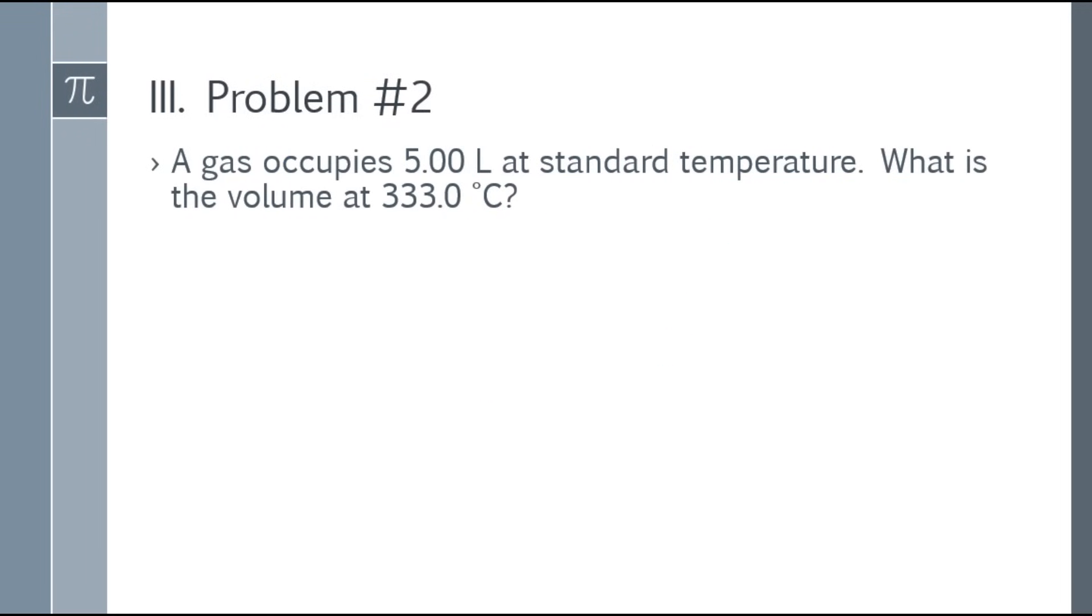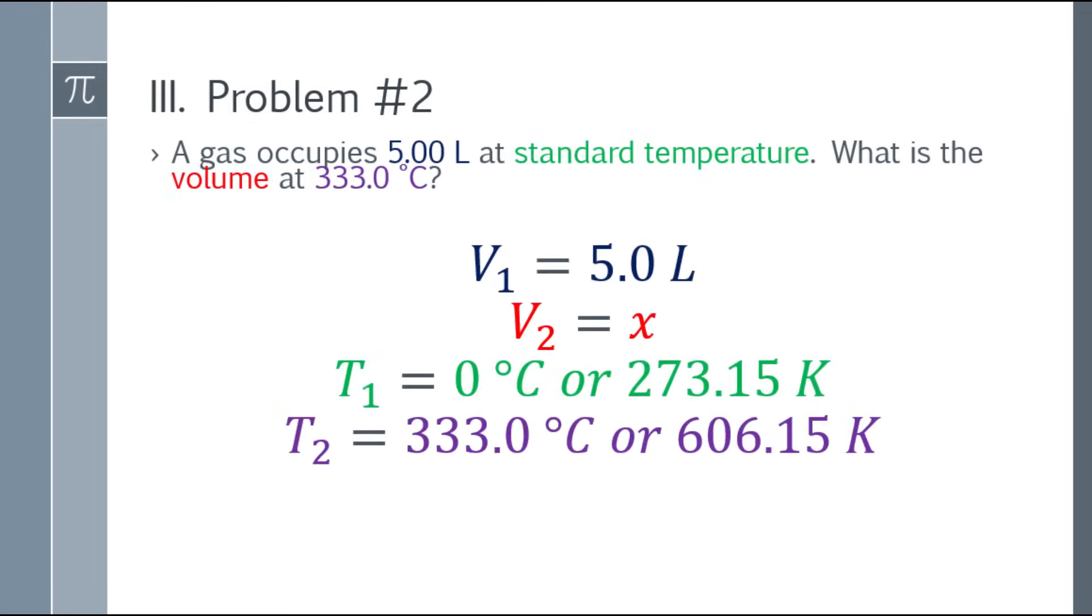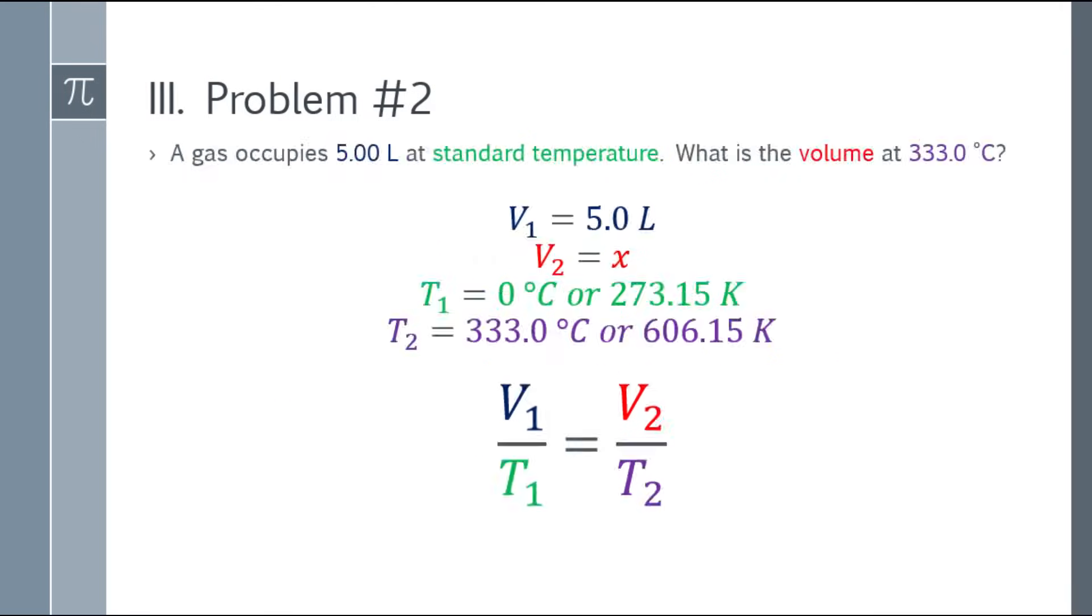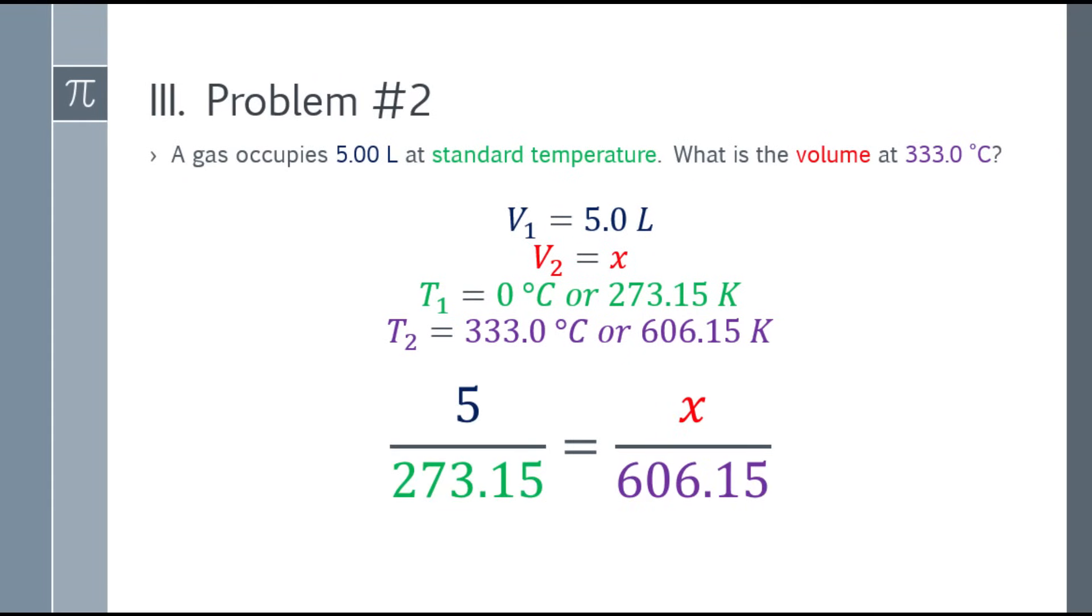Okay, let's move to problem number two. A gas occupies 5 liters at standard temperature. What is the volume at 333 degrees Celsius? What is standard temperature? Standard temperature is 0 degrees Celsius or 273.15 Kelvin. So list the given. For 333, add 273.15 to convert to Kelvin. So that will be 5 over 273.15 equals x over 606.15.